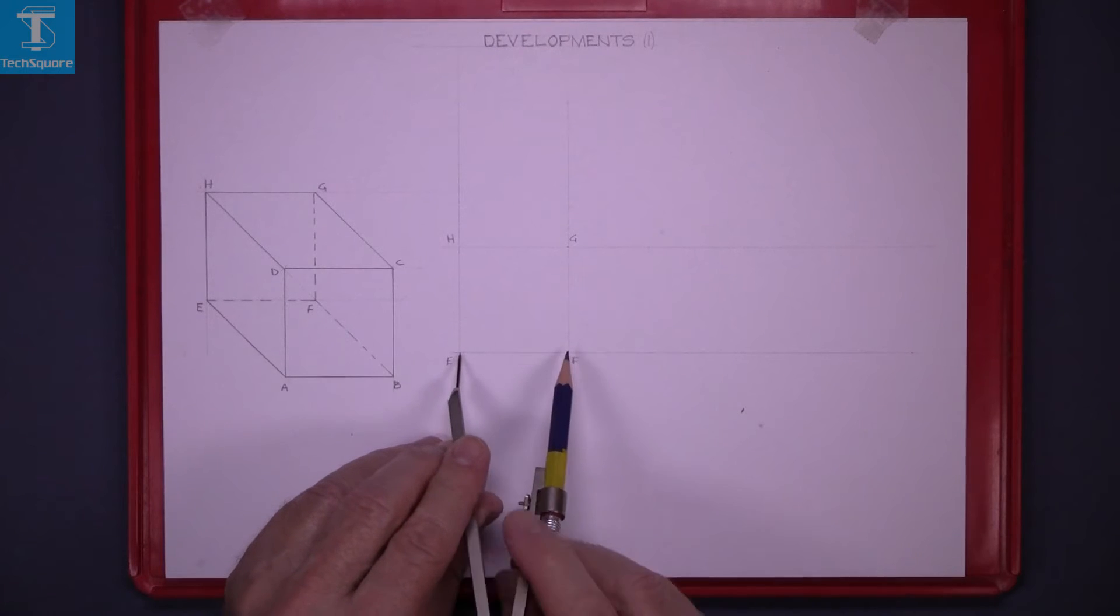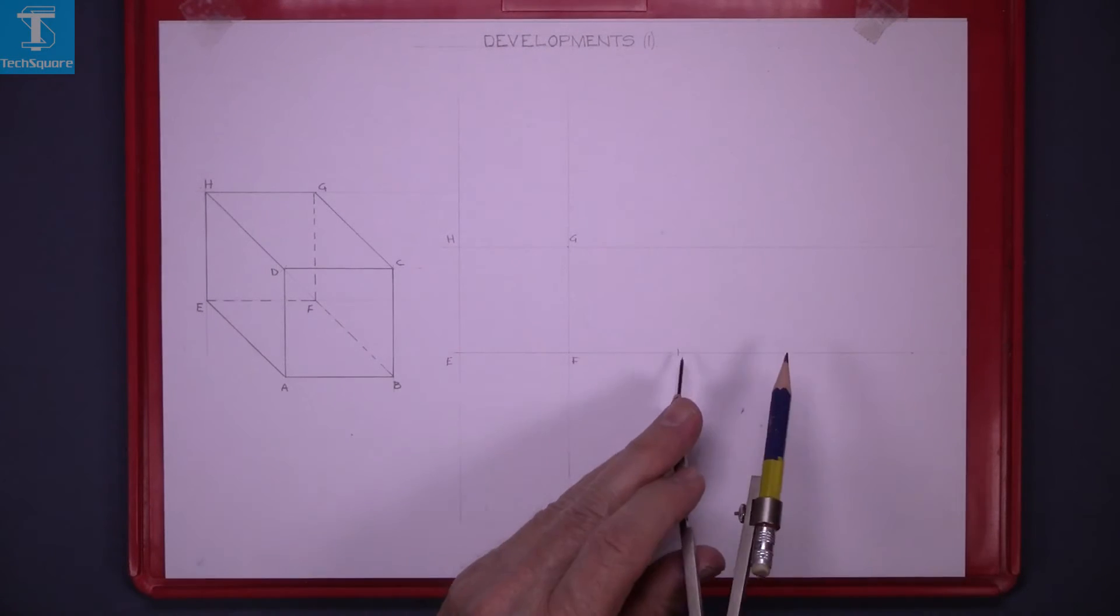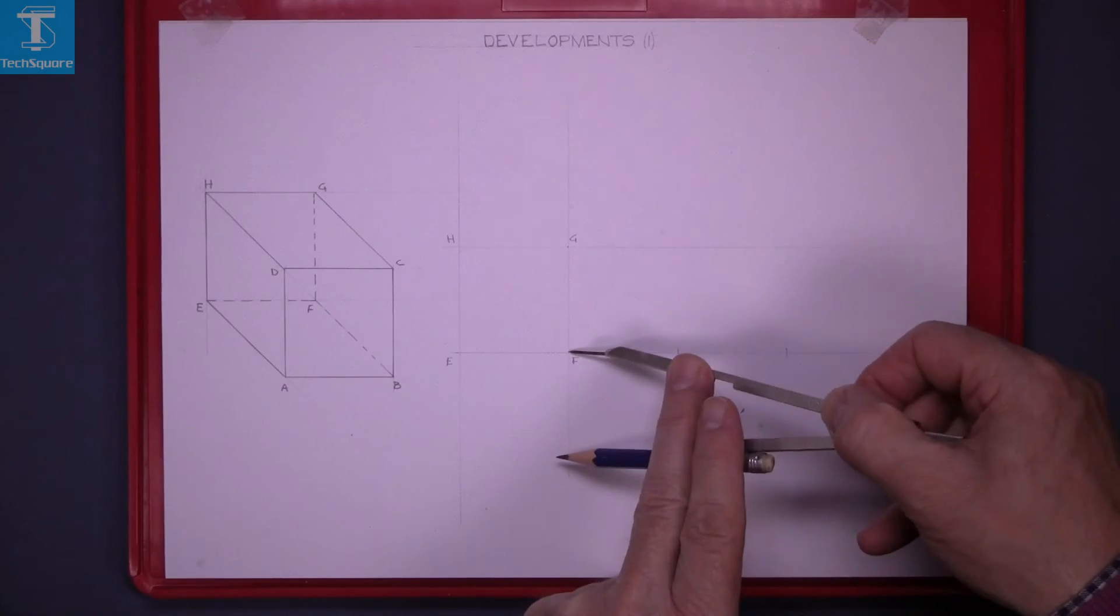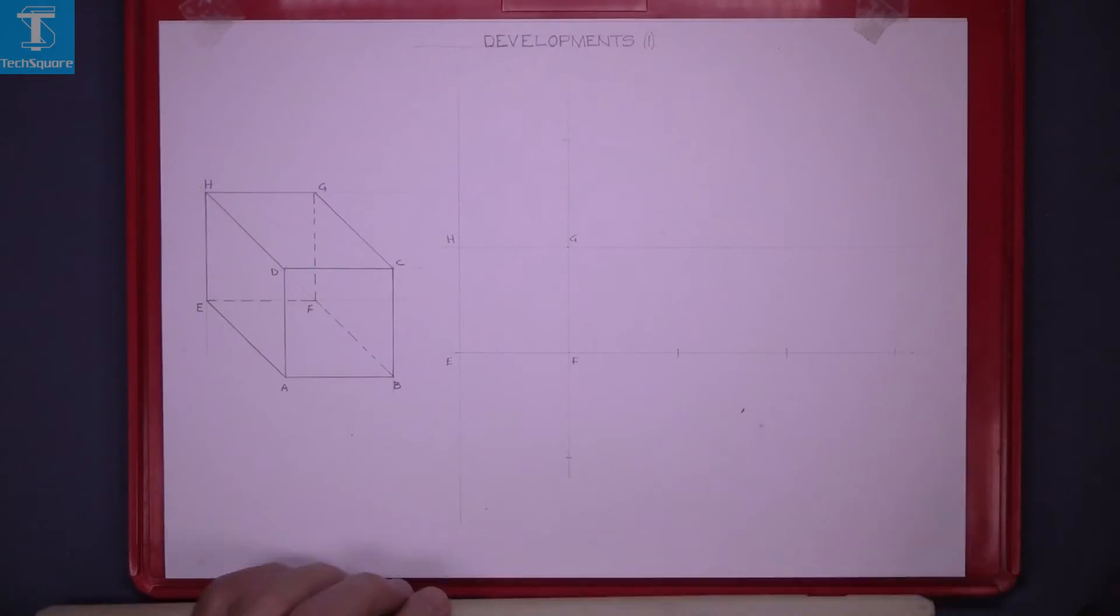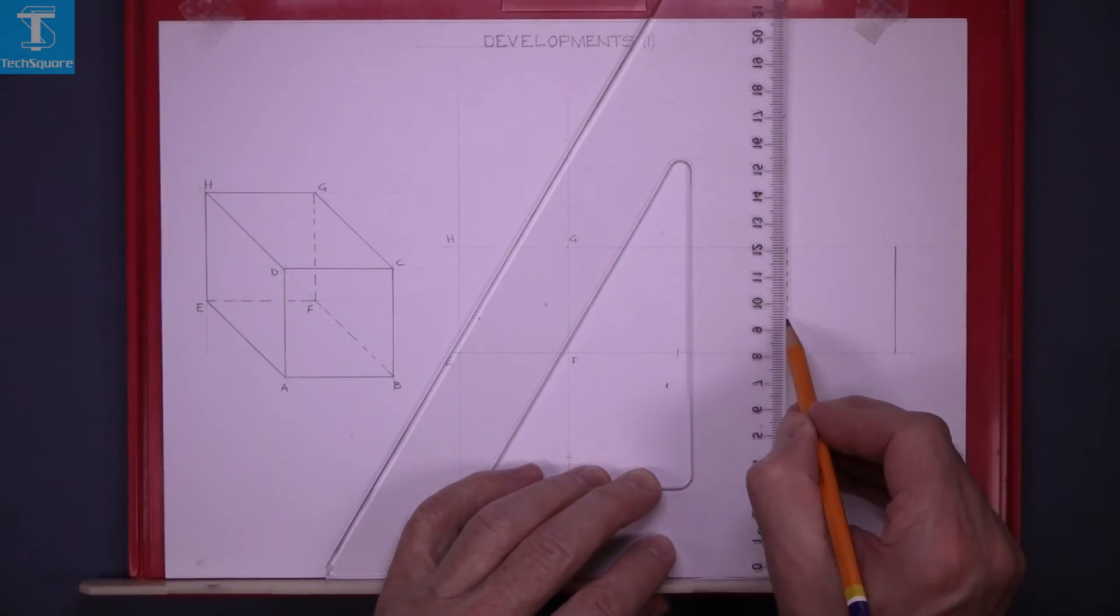Set the compass to the length of one line and mark it off three more times and one top and bottom. Line in the development.